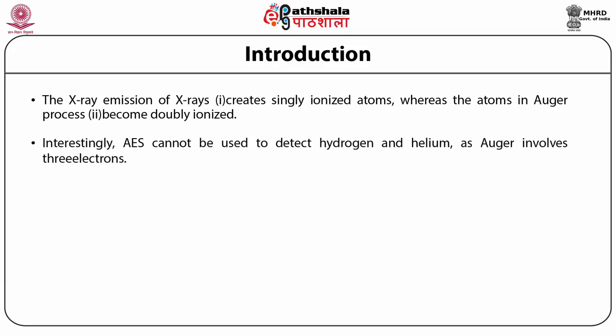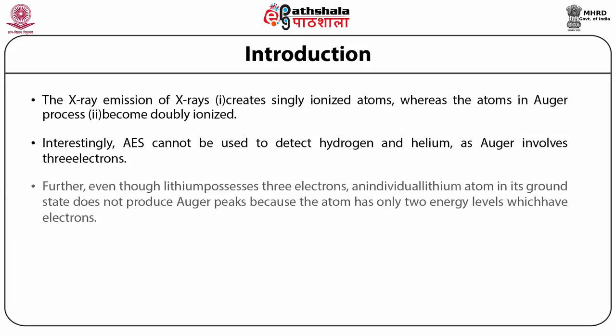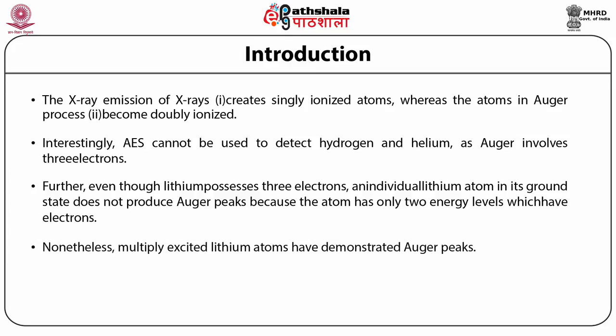The emission of X-rays creates singly ionized atoms, whereas atoms in the Auger process become doubly ionized. Interestingly, AES cannot be used to detect hydrogen and helium, as the Auger process involves three electrons. Furthermore, even though lithium possesses three electrons, an individual lithium atom in its ground state does not produce Auger peaks because the atom has only two energy levels which have electrons. Nonetheless, multiply excited lithium atoms have demonstrated Auger peaks.